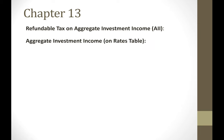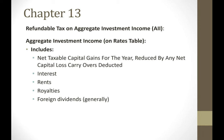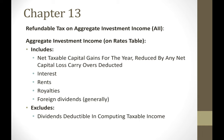Aggregate investment income is a defined term on your rates table. It includes: net taxable capital gains for the year reduced by any net capital loss carryovers; other passive income such as interest, rents, and royalties; and generally all foreign dividends. Note that it does not include Canadian-sourced dividends, because as we learned in Chapter 12, a corporation that receives a Canadian-sourced dividend is not taxed on it since it has already been taxed at the corporate level. It also does not include dividends that are deductible in computing taxable income.